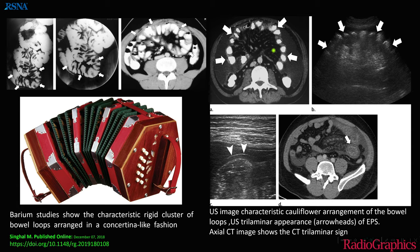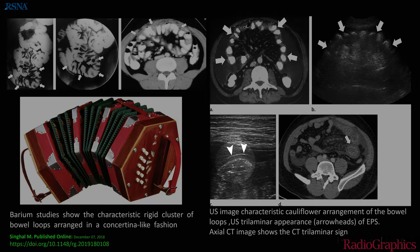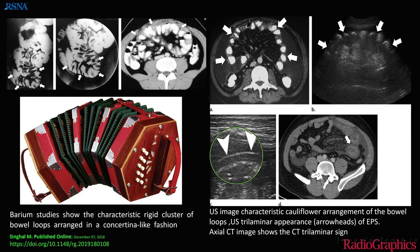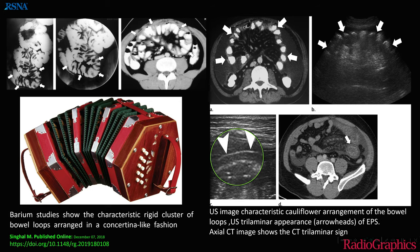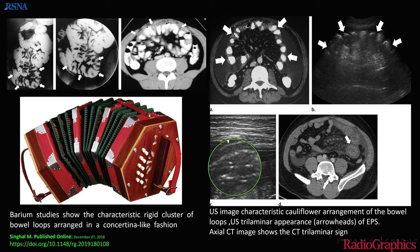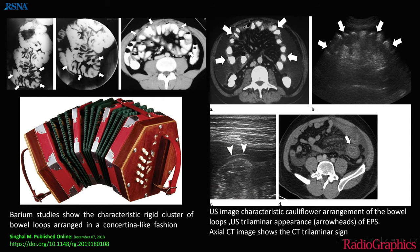The multiple bowel loops with a narrow base towards the mesentery mimic the cauliflower appearance. On ultrasound, the classical trilaminar appearance consists of an outer hyperechoic layer, a middle hypoechoic layer representing the mucosa and submucosa, and innermost echogenic bowel contents.